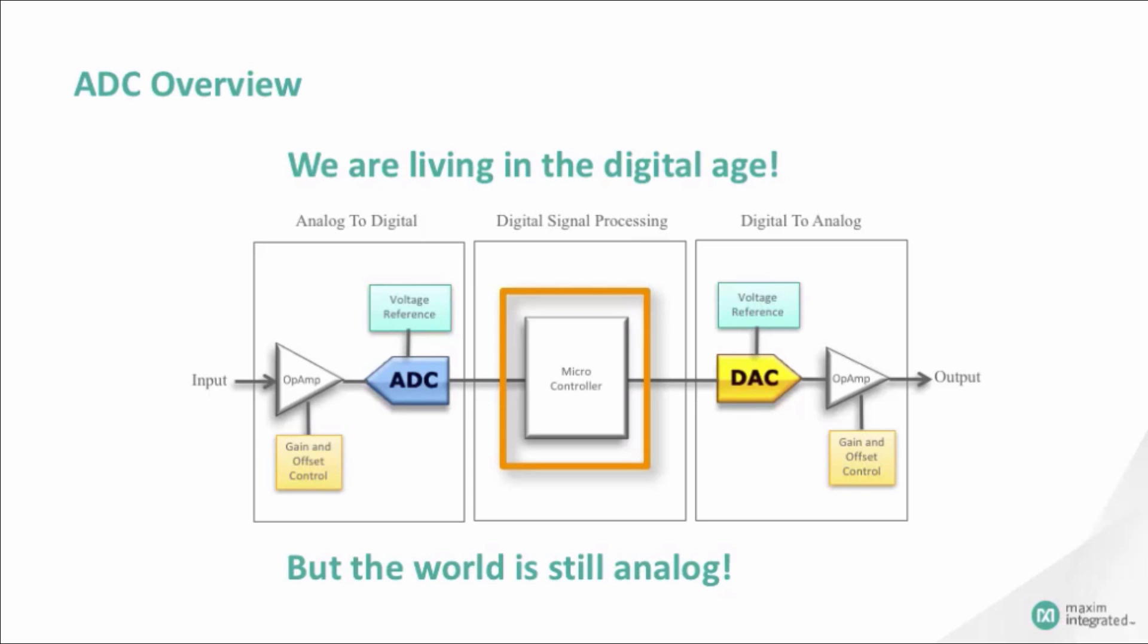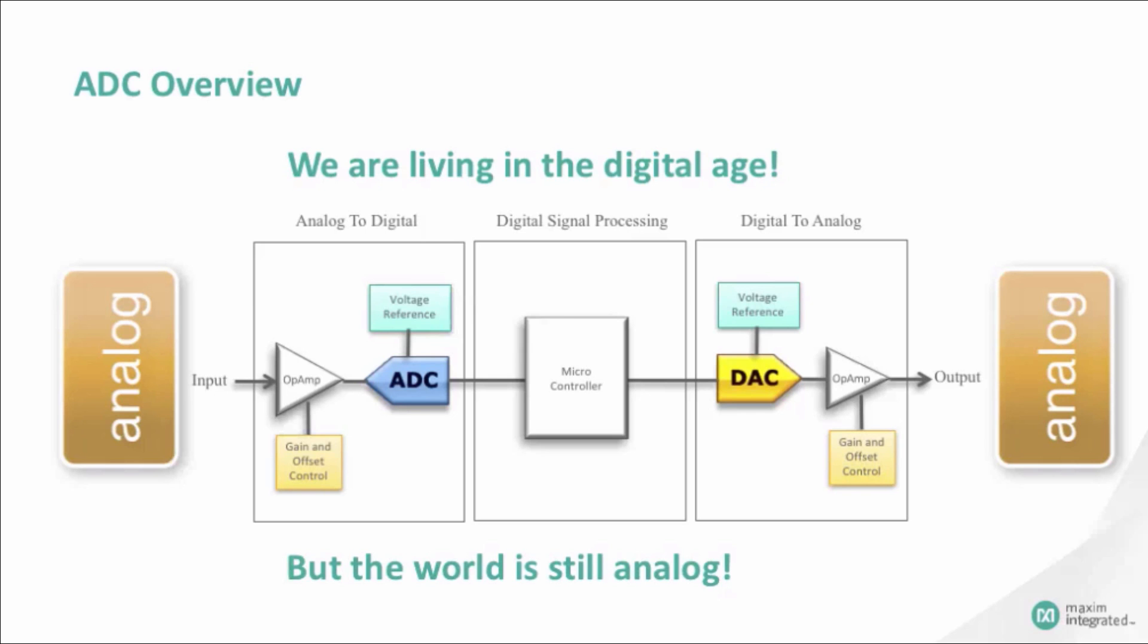In a typical signal chain, the front-end and back-end are analog signals. As a result, we need an ADC to convert the analog signal to digital for processing.